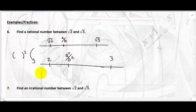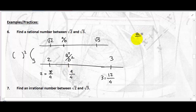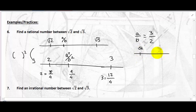2 is the same as 8 over 4, and 3 is the same as 12 over 4. I use denominator 4 because 4 is a perfect square. Between 8 and 12, I have 9 — and 9 over 4 falls between 8 over 4 and 12 over 4. So A over B is simply 3 halves. 3/2 falls between root 2 and root 3 — we found one rational number.